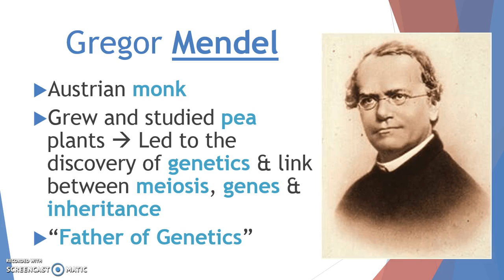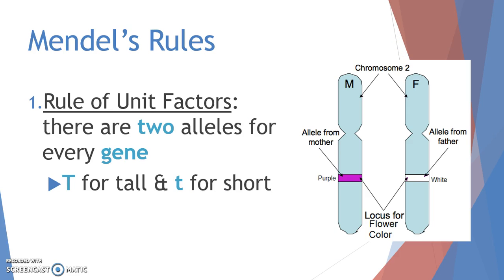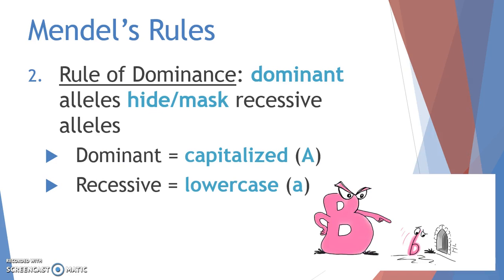Mendel came up with a few important rules that we'll follow throughout this unit to explain the inheritance of particular traits. His first rule is the Rule of Unit Factors, which simply states that there are two alleles for every gene. For height in a pea plant, for example, you'd either have a tall plant or a short plant — capital T for tall and lowercase t for short. There was no in-between and nothing beyond either extreme, so just two alleles.